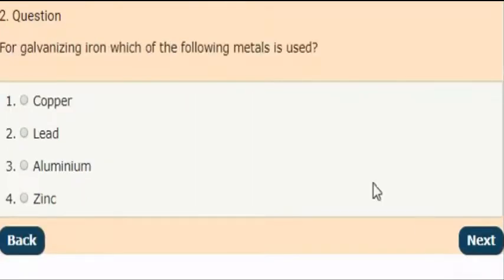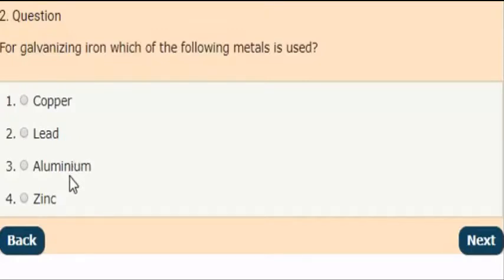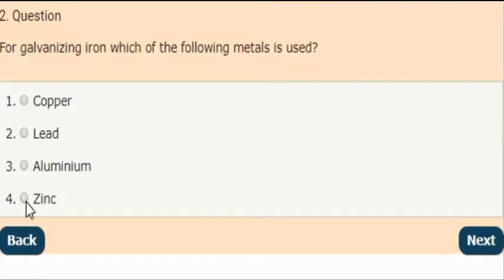Next question: For galvanizing iron, which of the following metals is used? The correct answer is option 4. For galvanizing iron, zinc metal is used.